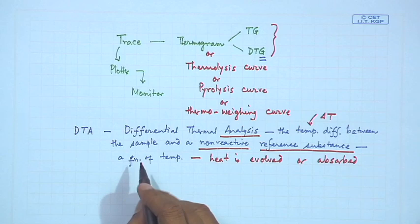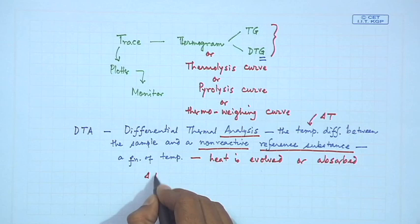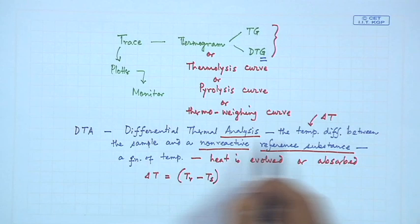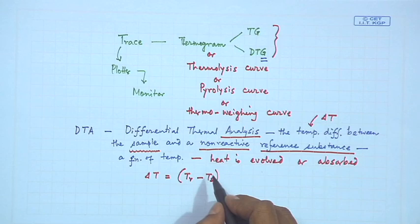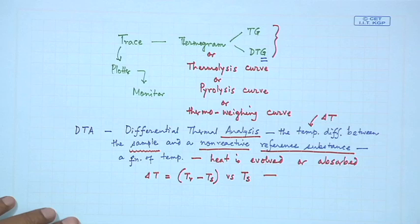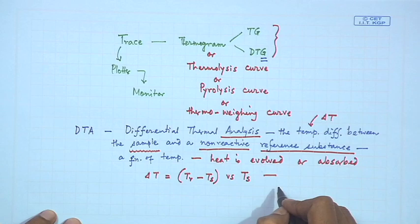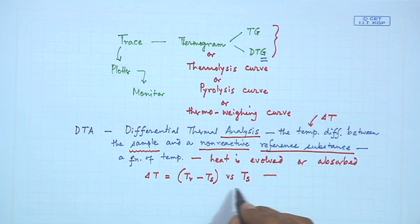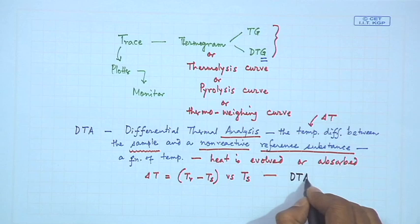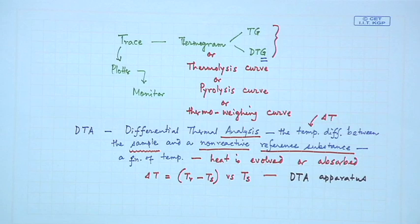Delta T is the temperature of the reference minus the temperature of the sample, plotted versus the temperature of the sample. The reference material is inert and non-reactive, so it does not undergo heat evolution or absorption. A dedicated DTA apparatus is used — not a simple thermobalance — and we obtain a DTA curve or DTA plot from the instrument.